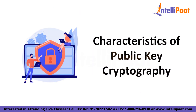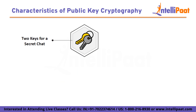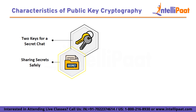Now let's see some characteristics of public key cryptography. First: two keys for a secret chat. Instead of using the same key to lock and unlock a message, you have your own special lock and key — one to lock and the other to unlock. You can share your public key with others, but the private key is your secret. Sharing secrets safely: you can give your public key to anyone you want to communicate with. They use it to lock the message, and only your private key can unlock it. Even if someone intercepts the locked message, they cannot read it without the private key.